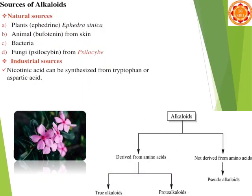In this slide we are showing the sources of alkaloids. First, natural sources: naturally occurring alkaloids from plants, like ephedrine which comes from Ephedra sinica. And animal sources, like bufotenin from the skin of a type of toad, where alkaloids are present on the skin layer.